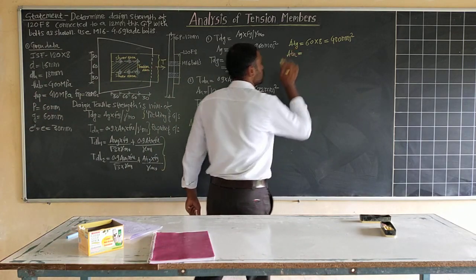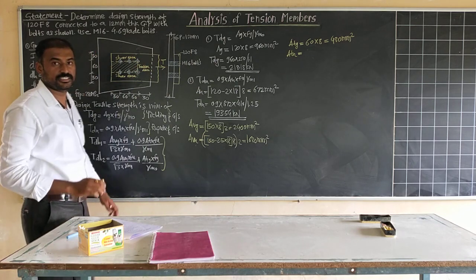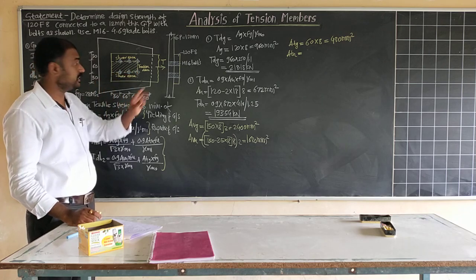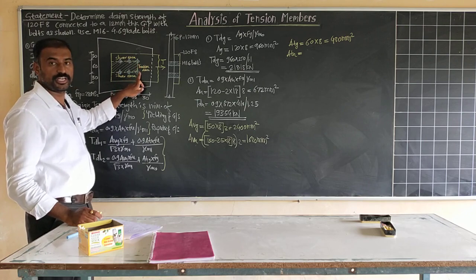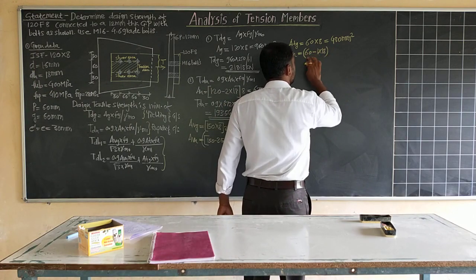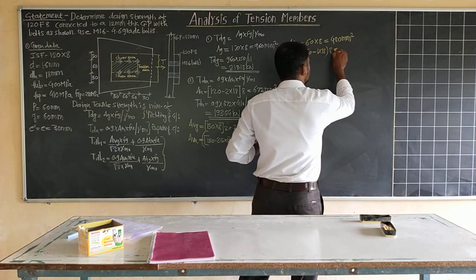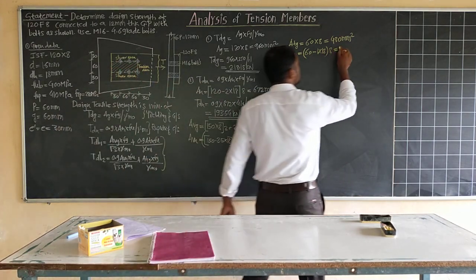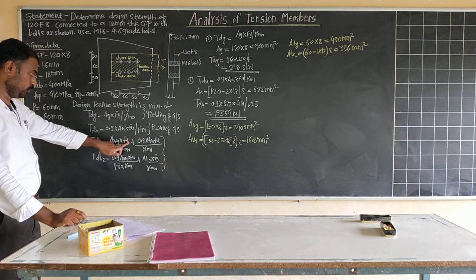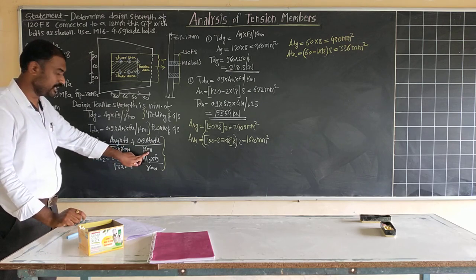For net tension area ATN, one full hole diameter is deducted (half from each side of the gauge): ATN = (60 − 1 × 18) × 8 = 336 mm². Material properties summary: FYP = 250 MPa, FUP = 410 MPa, γM0 = 1.1, γM1 = 1.25.